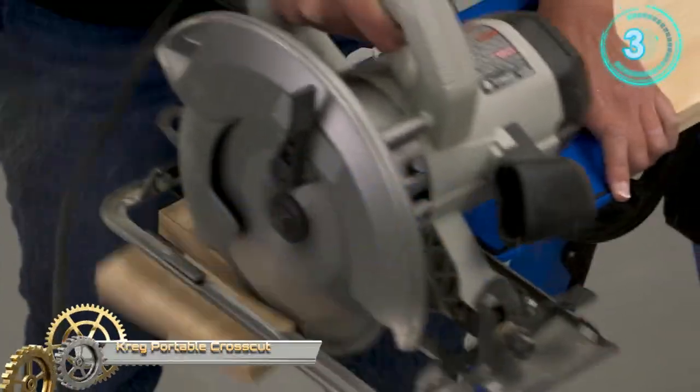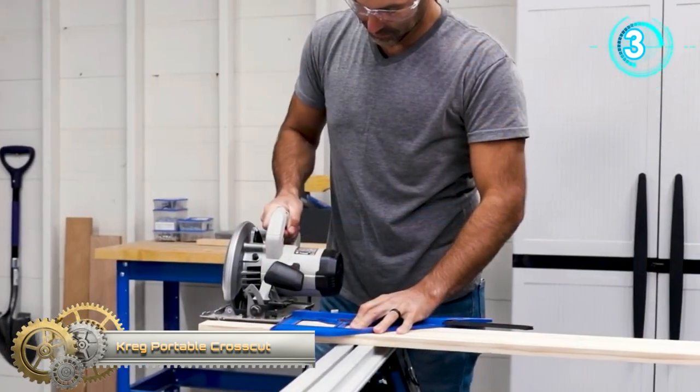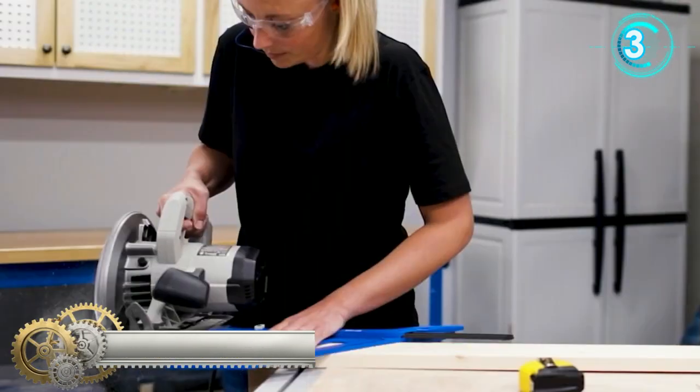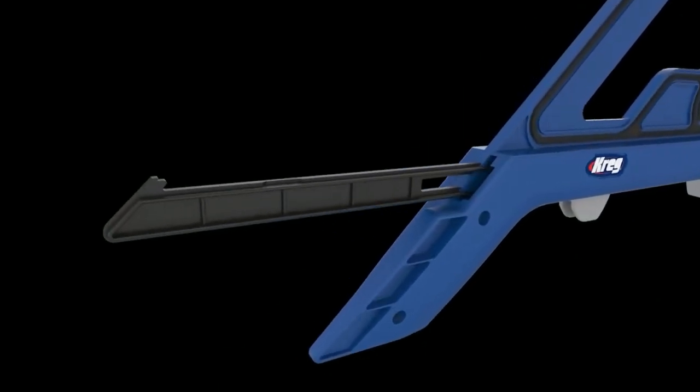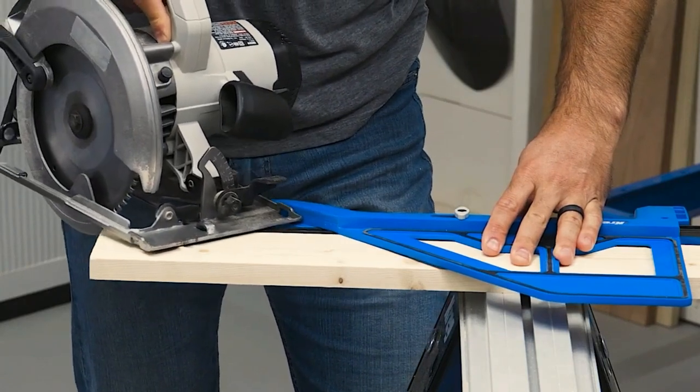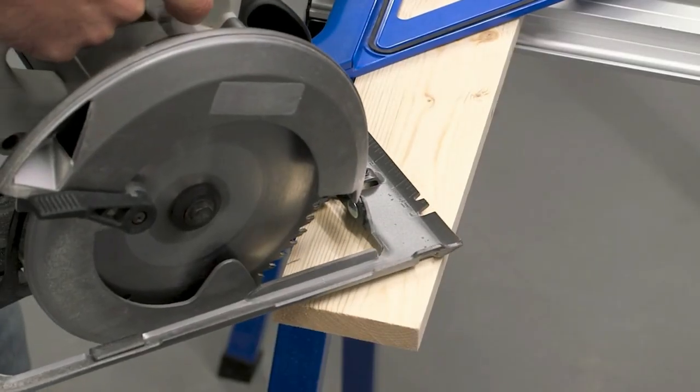The Craig portable crosscut helps you make perfect 90 and 45 degree cuts across boards using your circular saw. Now you can get professional quality results anywhere you need to cut quickly and easily using Craig guided cutting.